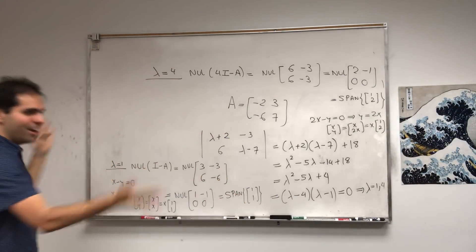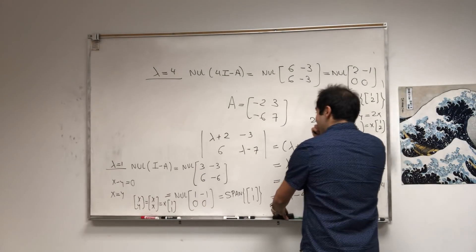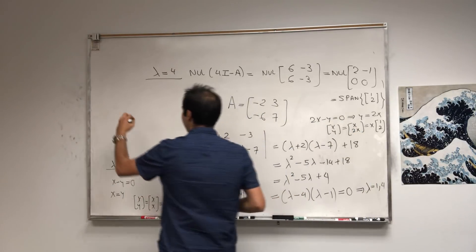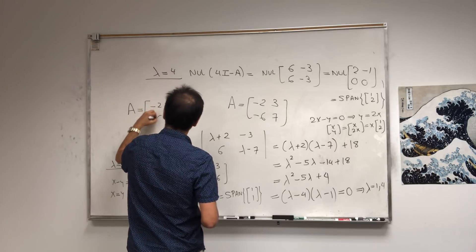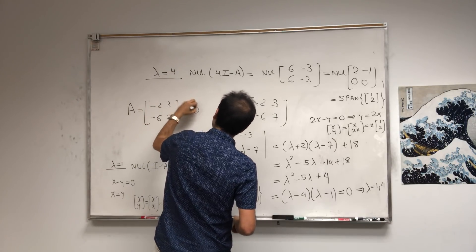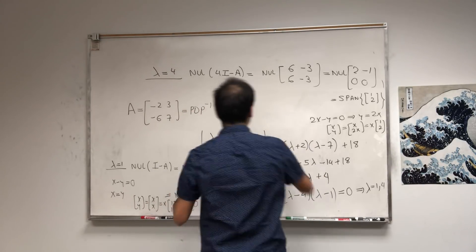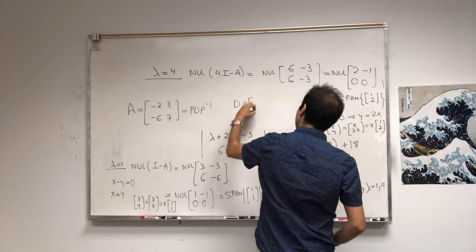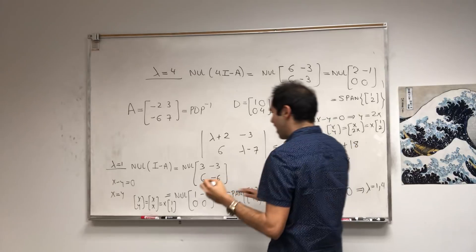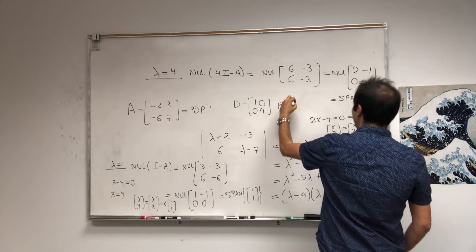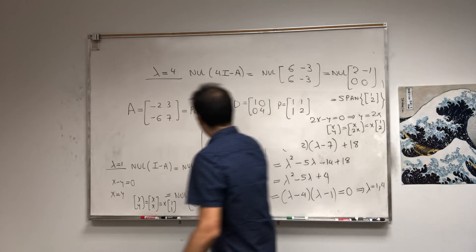Therefore, we can solve for A^2020 because A = [-2, 3; -6, 7] = PDP^(-1), where D is your matrix of eigenvalues [1, 0; 0, 4], and P is the matrix of corresponding eigenvectors [1, 1; 1, 2].